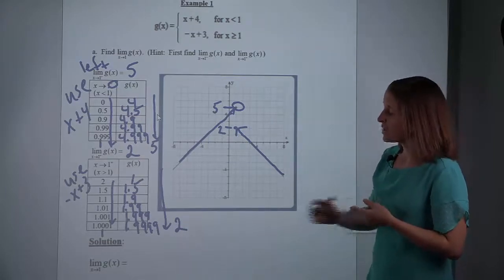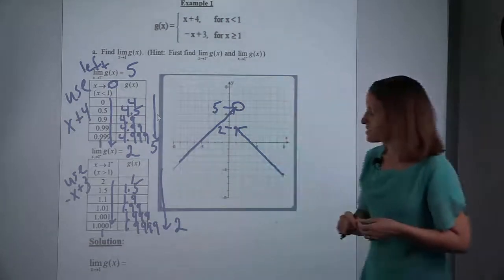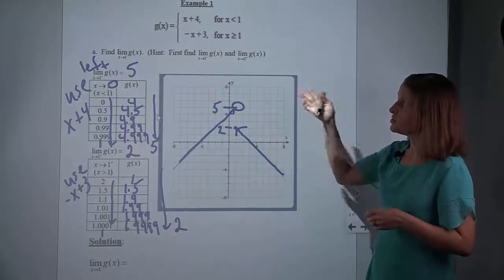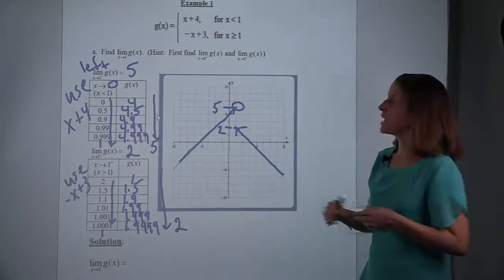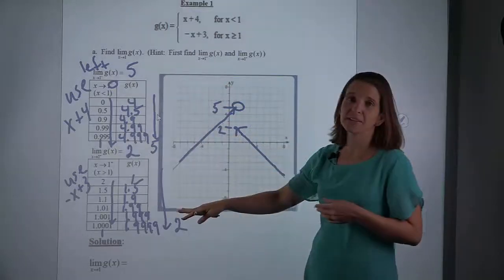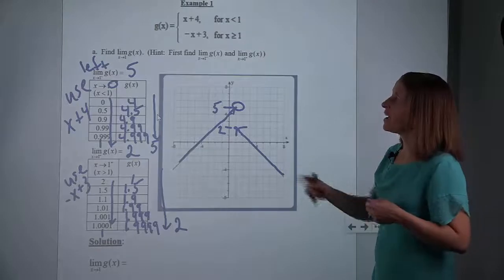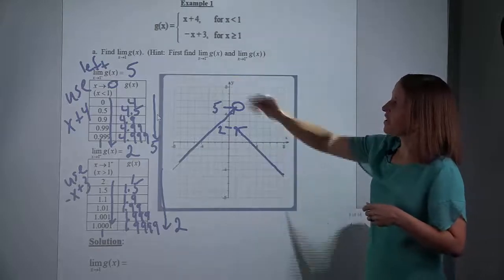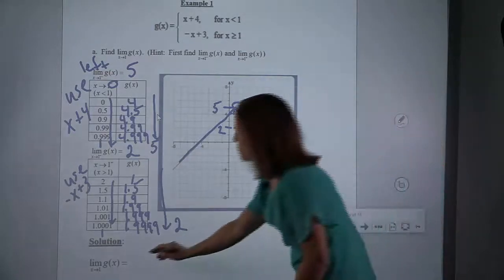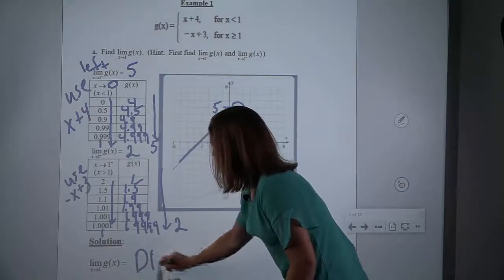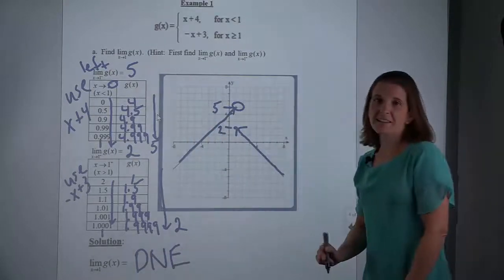So only now can we actually answer the question — the limit as x approaches 1 of the original function — because our theorem said we had to check from the left, from the right, and then see if they're equal. And what if they're not equal? Because they're not. From the left it was 5; from the right it was 2. So if they're not equal, we say that the limit does not exist. D-N-E stands for 'does not exist.'